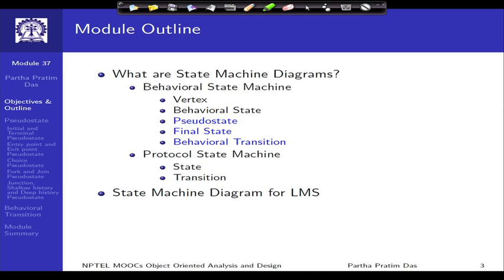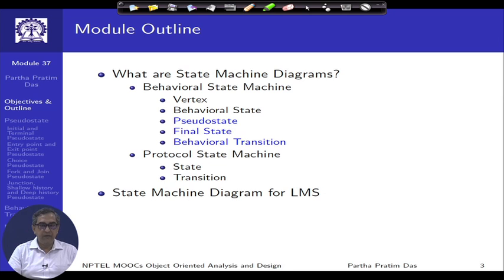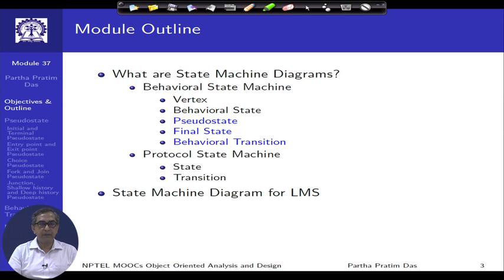Protocol state machine we have not discussed as yet. In terms of the behavioral state machine, we have seen that there could be different behavioral states: simple composite, which comprises substates in one region or in multiple orthogonal regions which happen concurrently, or it could have submachine states. In this context, we will next introduce the concept of pseudo states and talk about the behavioral transitions in this module.